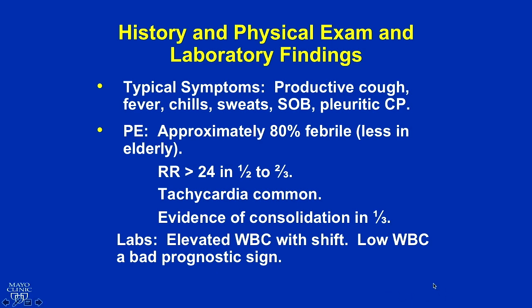On physical exam, patients are febrile about 80% of the time, at least at presentation. Less so in the elderly — your elderly patients may not spike much of a fever and may not get as much of a white count. Respiratory rate is typically elevated in at least half to two-thirds. Tachycardia is common. There is evidence on exam when you auscultate or look for E-to-A changes, about one-third of the time. Typically you have an elevated white count. If you have a low white count, that's a negative prognostic factor. Hypothermia and low white count with pneumonia means the body is getting beaten and not fighting adequately — something to keep in mind.